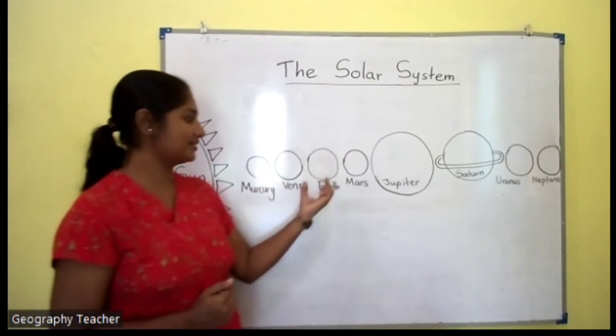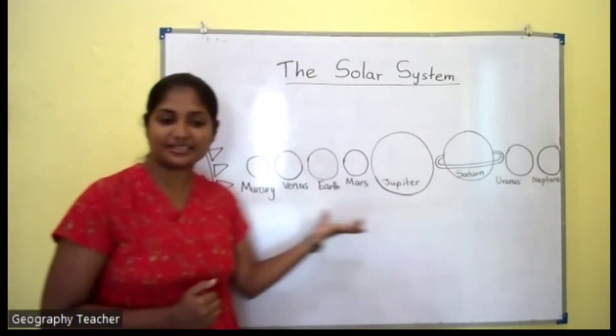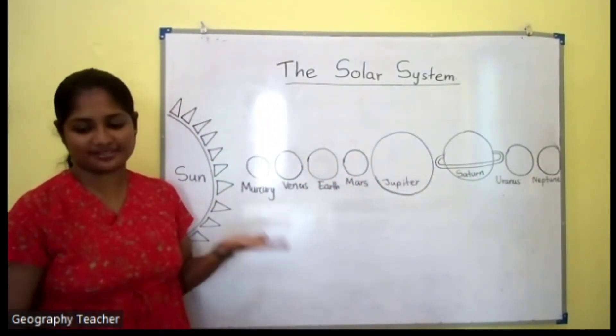Mercury, Venus, Earth, Mars, Jupiter, Saturn, Uranus, and Neptune. These are the planets in our solar system.